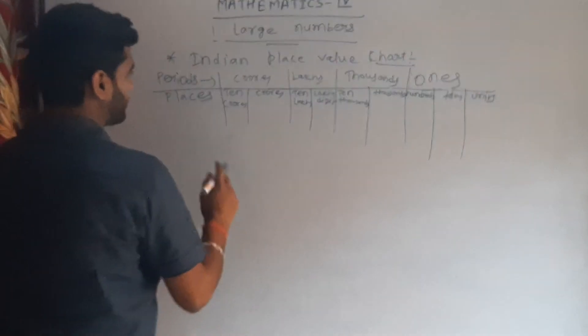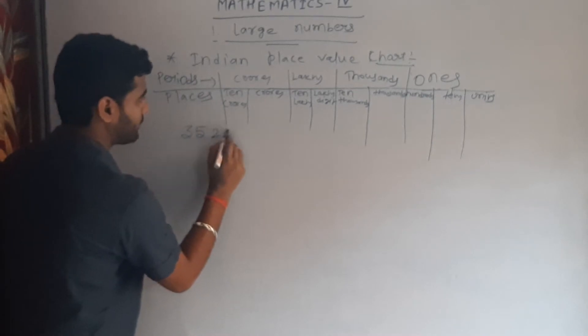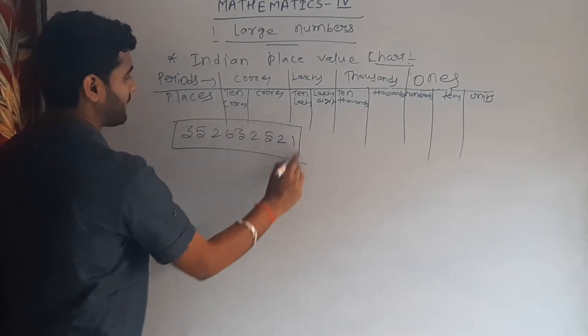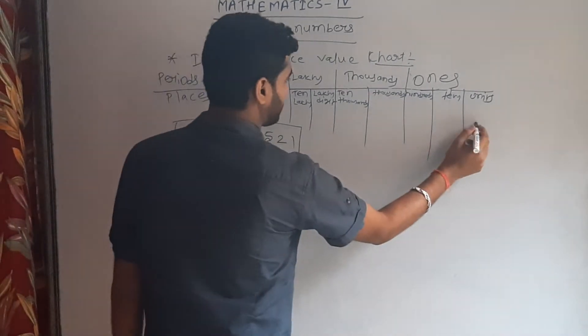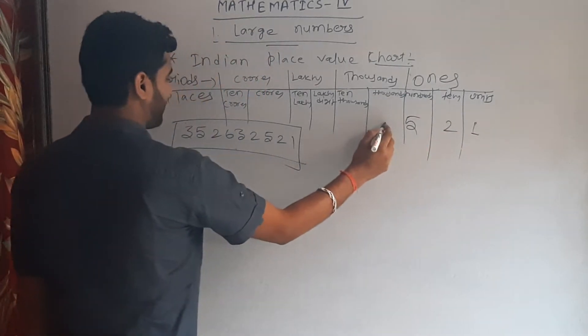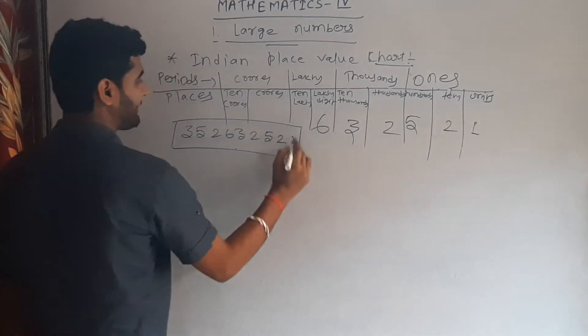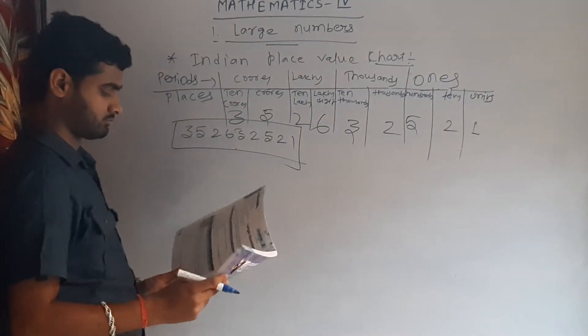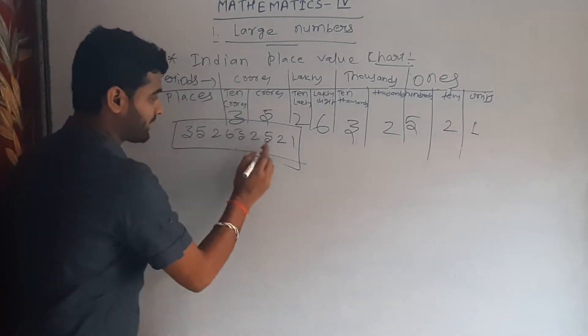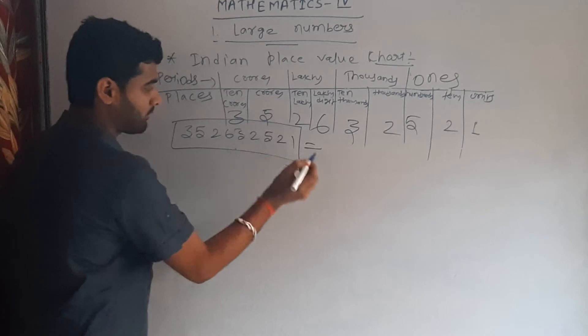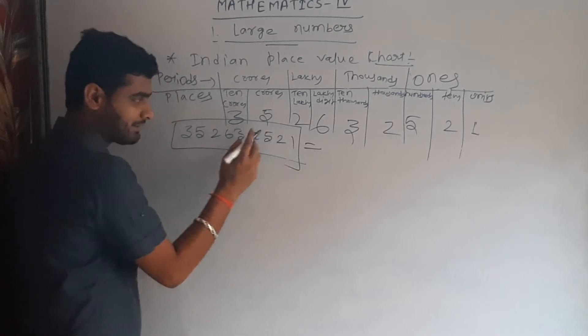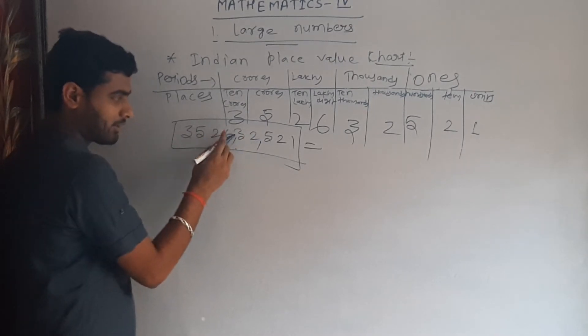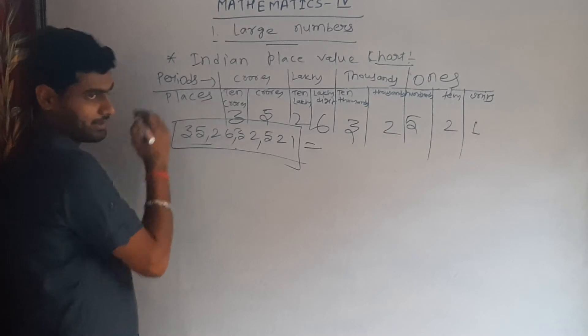If you take 5,26,32,521 in Indian place value chart, so we write here 1, 2, 5, 2, 3, 6, 2, 5, 3. If you have to insert a comma, then first comma is inserted before three digits, second comma is inserted before two digits, and third is also before two digits. Like that, all commas are inserted.